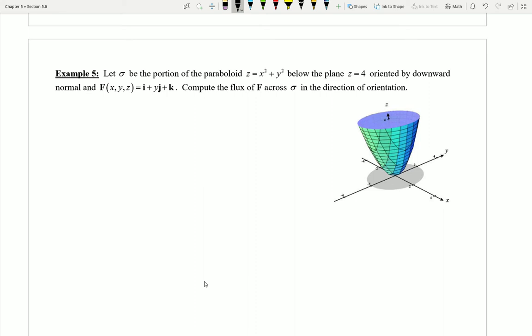This is our final video for section 5.6 and we'll take a look here at example 5 and try to see what happens if we start to deal with things that are potentially oriented downward. So let's see what we have here.